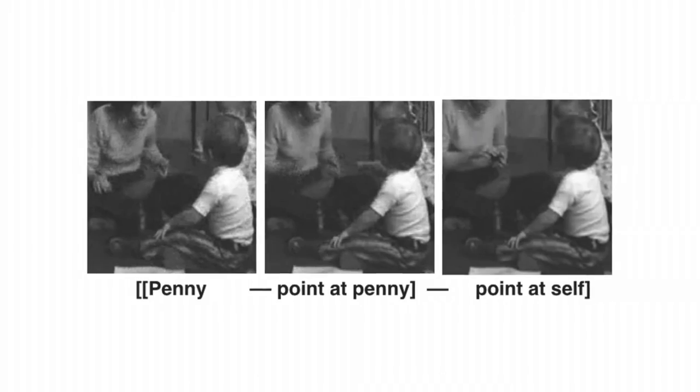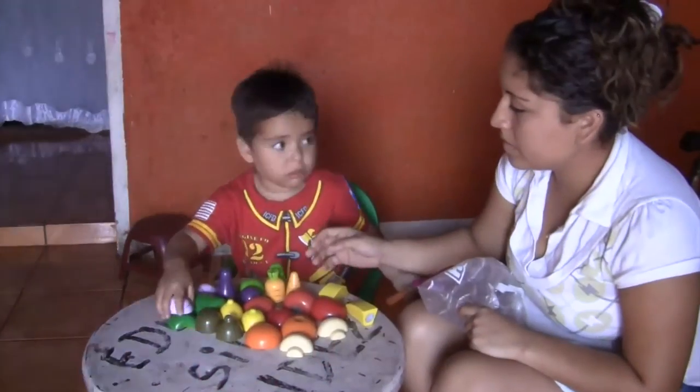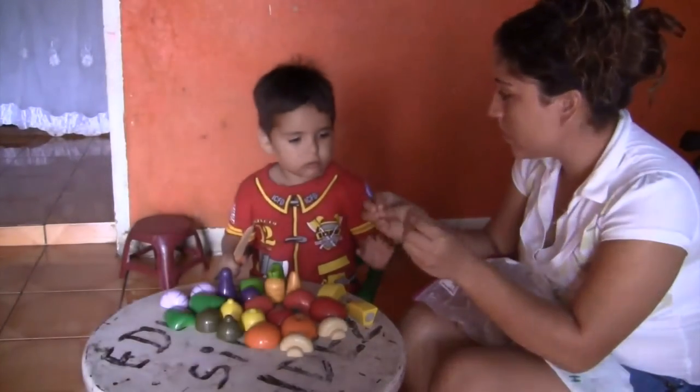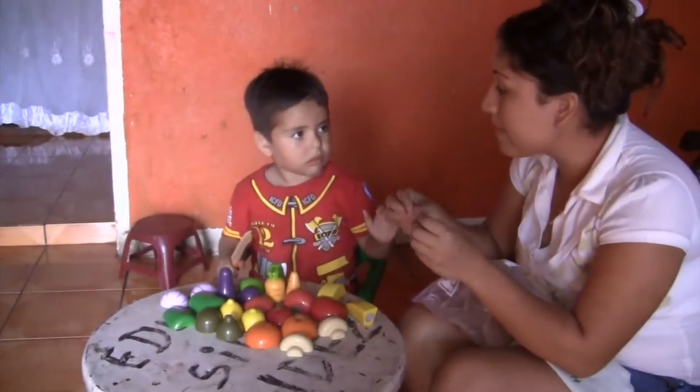Their hearing parents, first of all, rarely combine two gestures. And when they do combine those two gestures, they're often in random order. So the hearing mothers aren't providing enough of a model for the children. The children are really contributing these sort of really fundamental properties of language to the system itself.